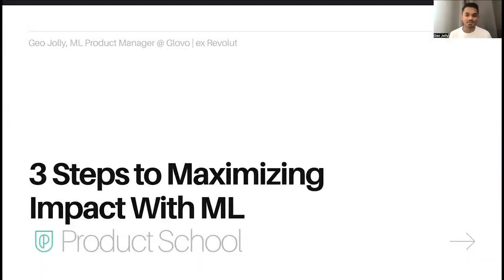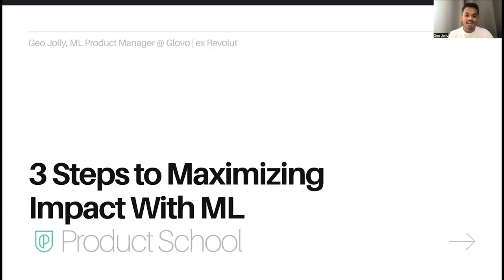Hey, everyone. Thanks a lot for taking your time to join this webinar on three steps to maximizing impact with machine learning. I am Gio. I work as a product manager for Glovo. Glovo is a super app that gives access to anything for their customers in their particular city. Prior to Glovo, I used to work at Revolut where I was managing a team of data scientists and data engineers, focusing really on anti-financial crime machine learning models. Prior to that, I used to work as a data scientist, and I did a transition from data science individual contributor to product management. During this time, I'm going to share with you how I used my experience in product management, and very specifically on machine learning product management.